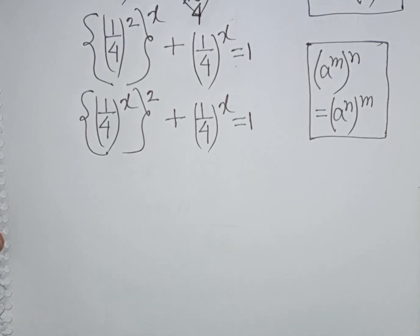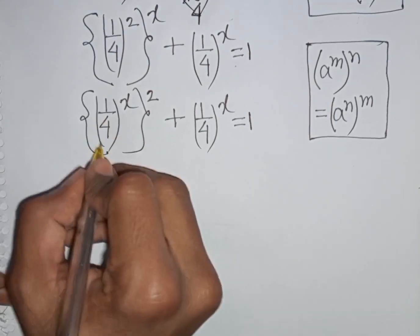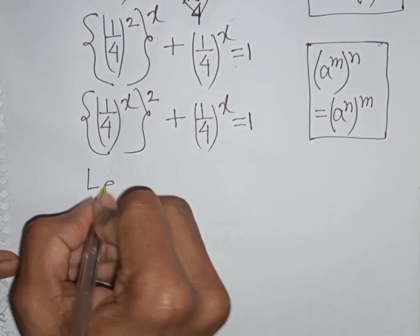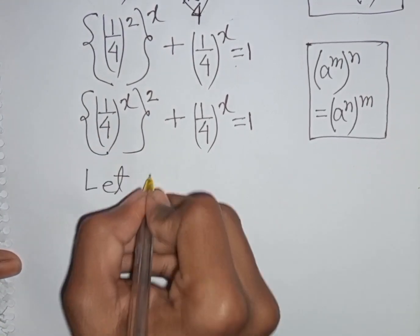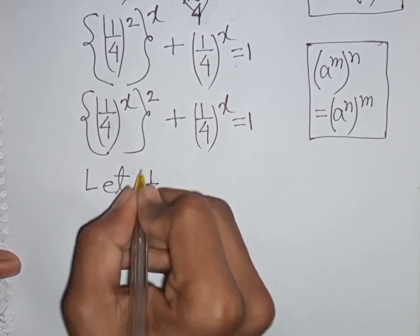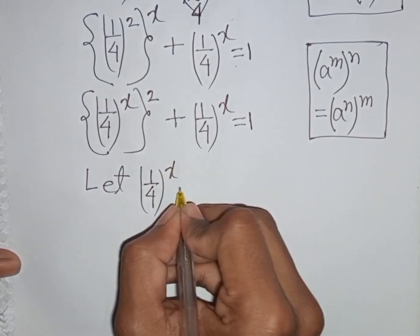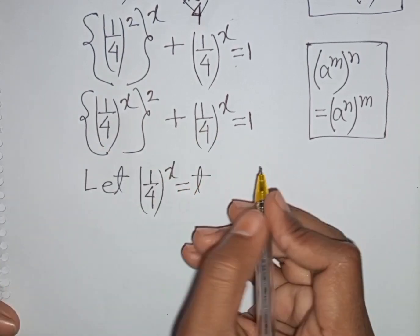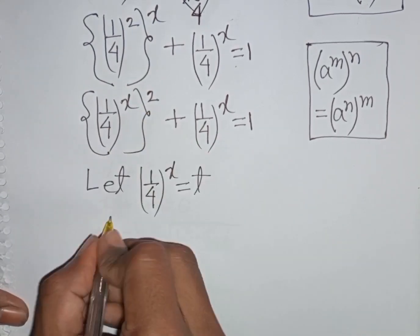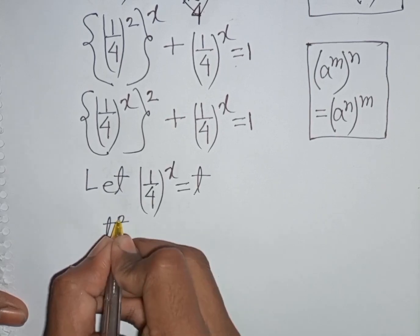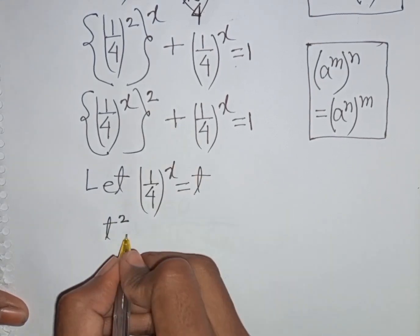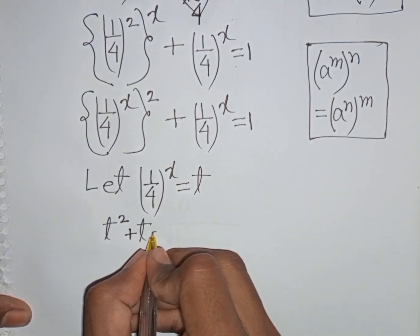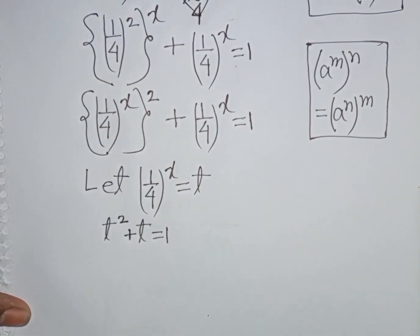We see (1/4)^x and (1/4)^x — both terms are the same. So we substitute: let (1/4)^x equal t. Our equation becomes t squared plus t equals 1.